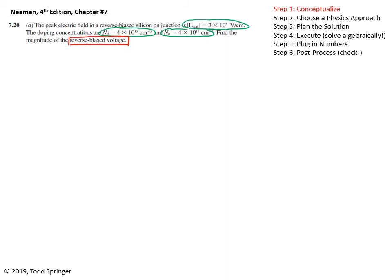We've got the maximum electric field in the junction, the doping concentrations on each side, and we're asked to find the reverse bias voltage, that's Vr, so that's our target variable.